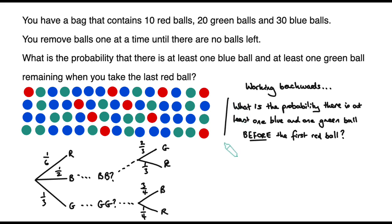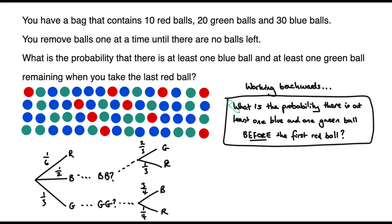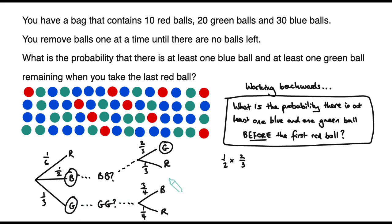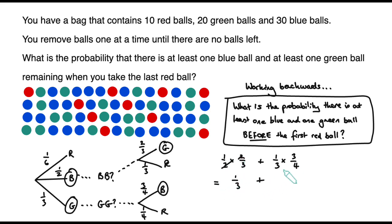So what's the probability there's at least one blue and one green ball before the first red ball? There are two ways this can happen: we either get a blue ball first and then a green before a red, with probability 1/2 × 2/3; or we get a green ball first and then a blue before a red, with probability 1/3 × 3/4. So the answer is 1/2 × 2/3 + 1/3 × 3/4, which simplifies to 1/3 + 1/4, giving us 7/12.